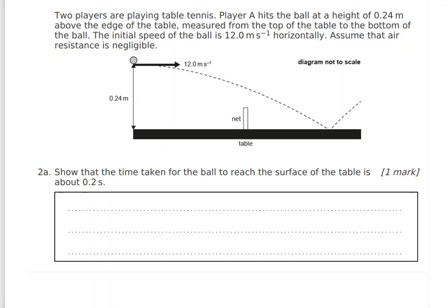...hits the ball at a height of 0.24 m above the edge of the table, measured from the top of the table to the bottom of the board. The initial speed of the ball is 12 m/s in the x-direction. The projectile is launched horizontally, meaning the initial speed in the y-direction is zero.